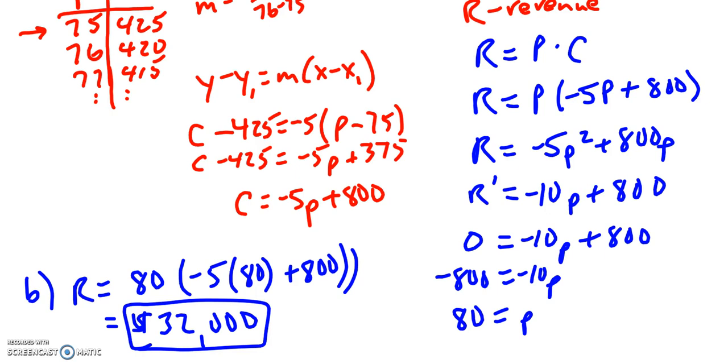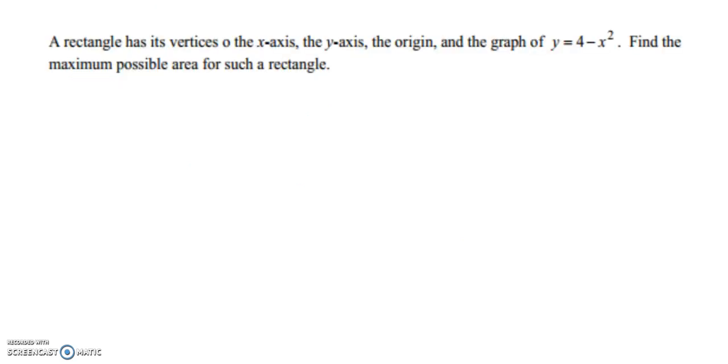So let's go ahead and move on to our second example here. This one says we have a rectangle has vertices on the x-axis, the y-axis, the origin, and the graph of y equals 4 minus x squared. Find the maximum possible area for such a rectangle. So let's go ahead and draw this. We're going to have a coordinate plane here.